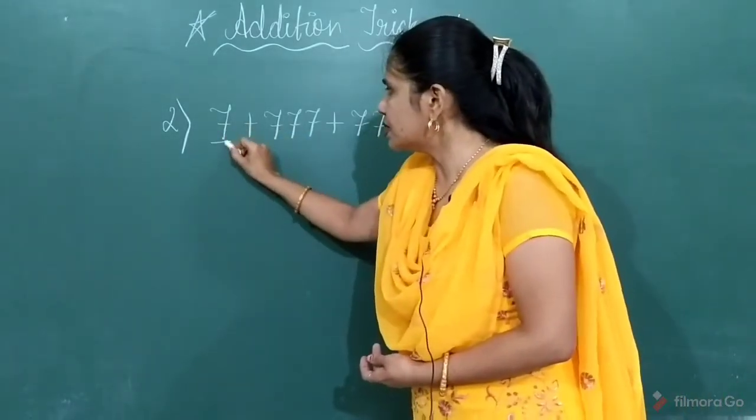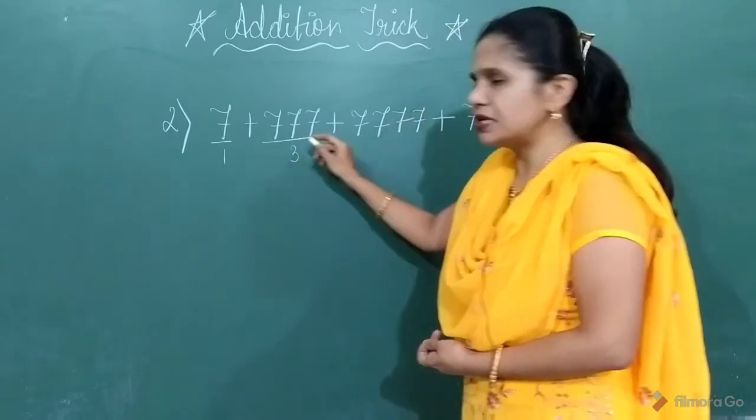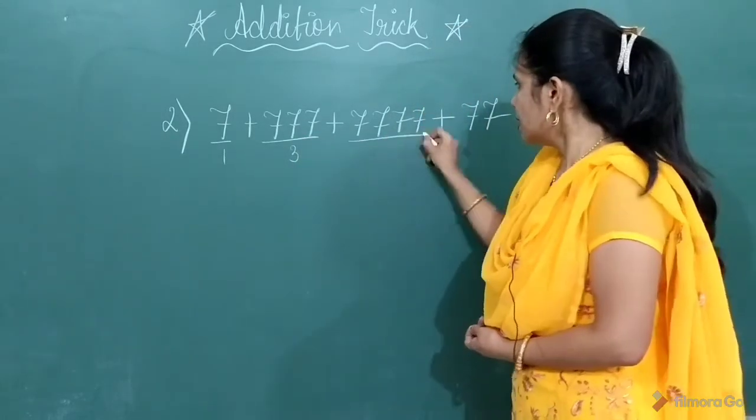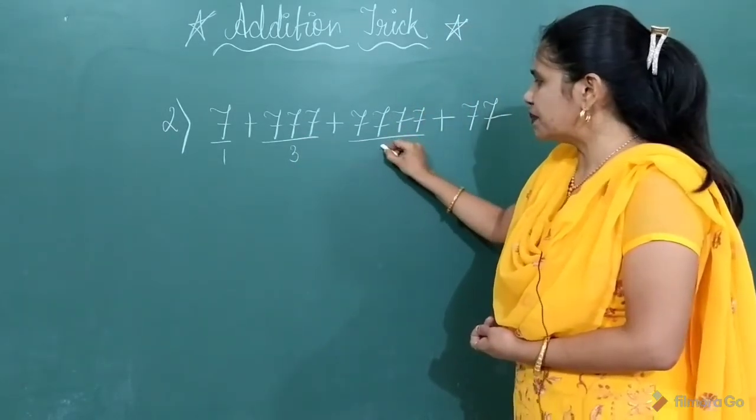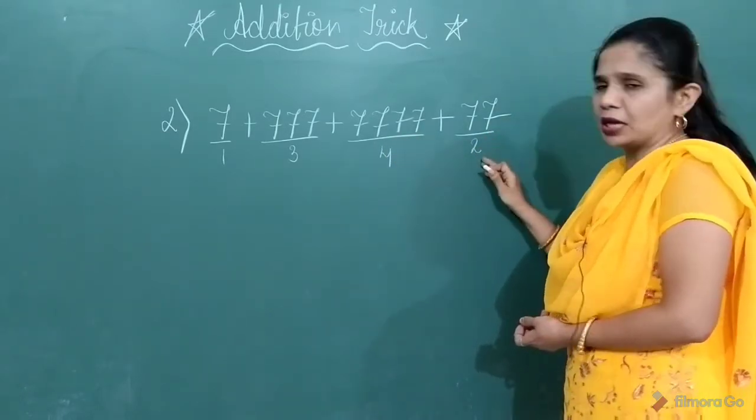In the first number, it's repeating 1 time. In the second one, the digit 7 is repeating 3 times. In the third number, it's repeating 4 times. And at last, it's repeating 2 times.